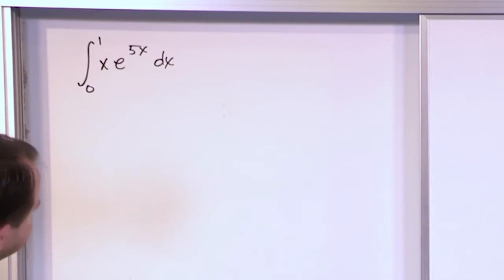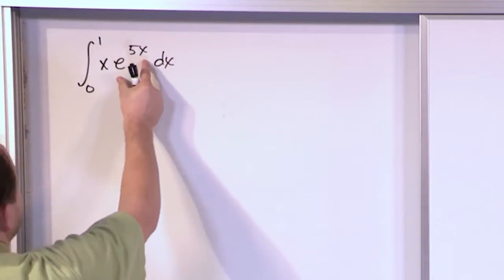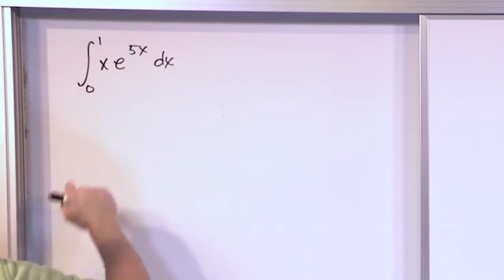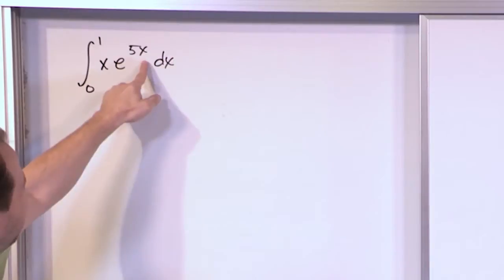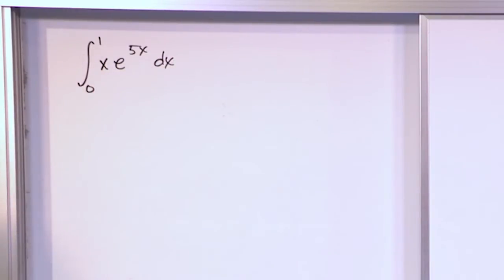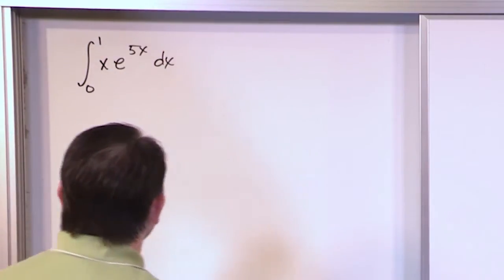We notice that this problem follows a general form. We have an indestructible function — meaning that you keep taking derivatives of this term over and over and it really never disappears. And then x is destructible because if you keep taking derivatives of it, it ends up disappearing after a while. So in general this is a form where we use integration by parts, or at least as a starting point.